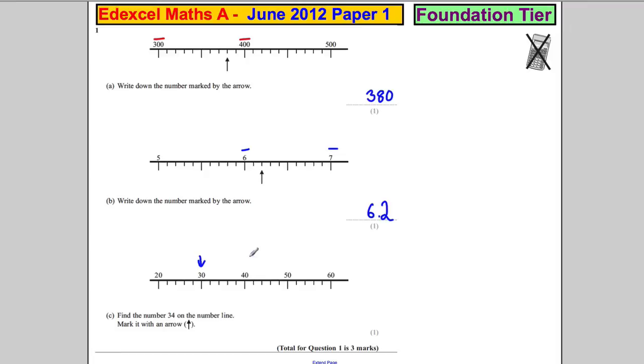On the number marked with an arrow, here's 30 and here's 40. I want 34. There are one, two, three, four, five divisions, so each one must be worth 2. So it's 32, 34. It's here. Actually, 34 would be there, and we're done for the first question.